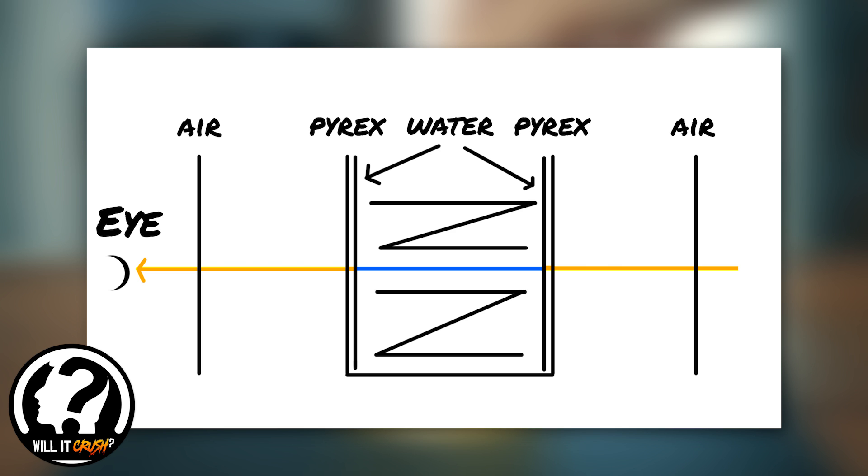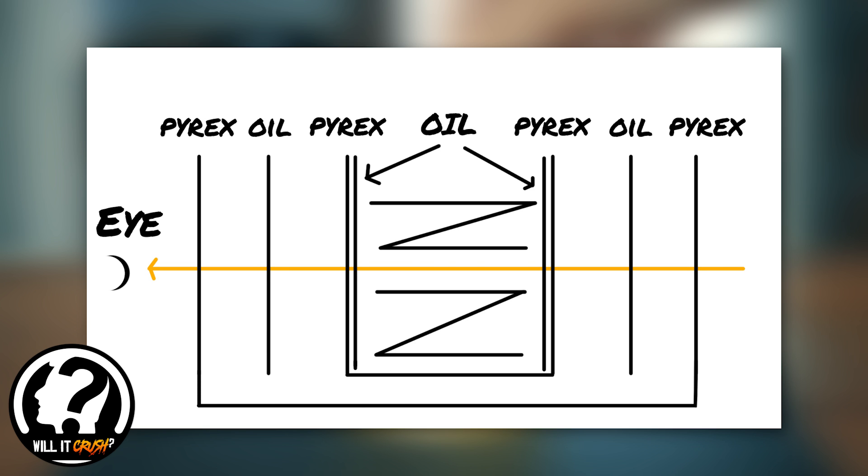This is different to the example we've just shown. As you can see in this next drawing, light as it travels through the pyrex and through the oil and then through the pyrex again and more oil, the light is traveling at a pretty constant rate. So you don't get much refraction, which is why it looks invisible, because light travels at the same speed through all the objects.